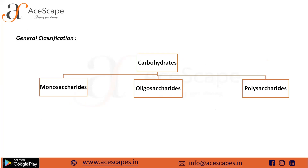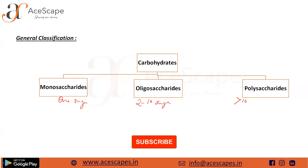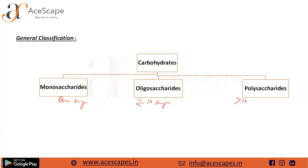Moving to the general classification, carbohydrates are classified into three types: monosaccharides, oligosaccharides, and polysaccharides. In monosaccharides there is only one sugar molecule. In oligosaccharides there are around two to ten sugar molecules. If the number of monomer units is greater than ten, it is known as a polysaccharide.